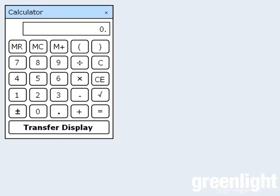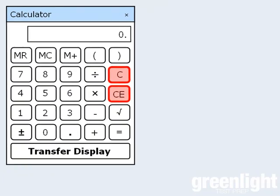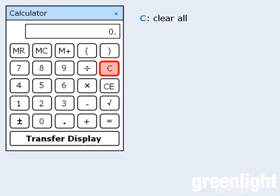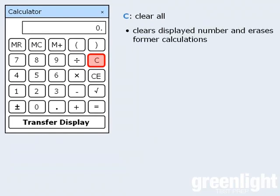So that takes care of the buttons that perform operations on numbers. Now let's take a look at these two buttons. They both allow you to clear all or part of your entries. To begin, this button is the clear all button. It removes the number from the display and erases any calculations performed up to that point. Use this button when you want to start a calculation all over again.